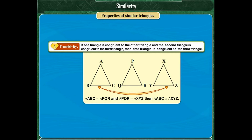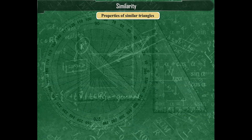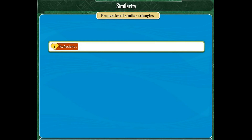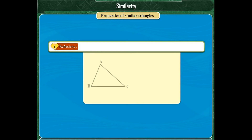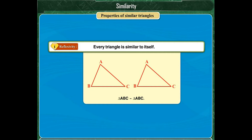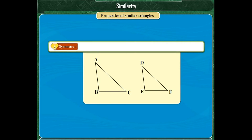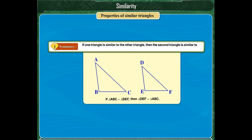All these three properties are applicable to similar triangles. The first property is reflexivity: triangle ABC is similar to triangle ABC, meaning every triangle is similar to itself. The second property is symmetry: if triangle ABC is similar to triangle DEF, then triangle DEF is similar to triangle ABC — if one triangle is similar to the other, then the second is similar to the first.